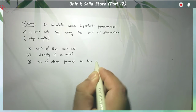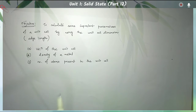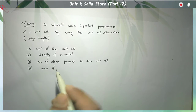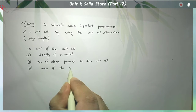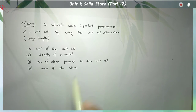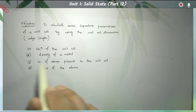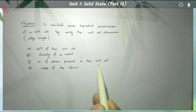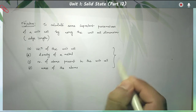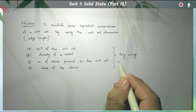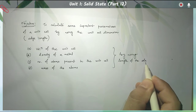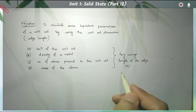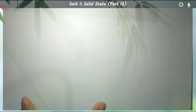The number of atoms present in the unit cell, and additionally we can also calculate the mass of the atoms present in that unit cell. So the main objective of this class is to calculate the volume of the unit cell, density of the metal or solid, the number of atoms present, and the mass of the atoms — all using the edge length 'a'. Interestingly, all these parameters are related to each other by an equation.